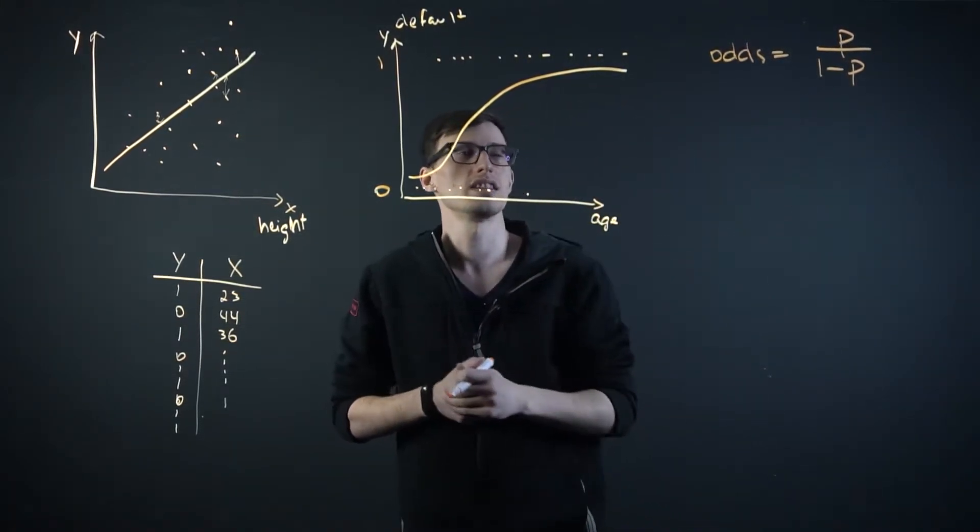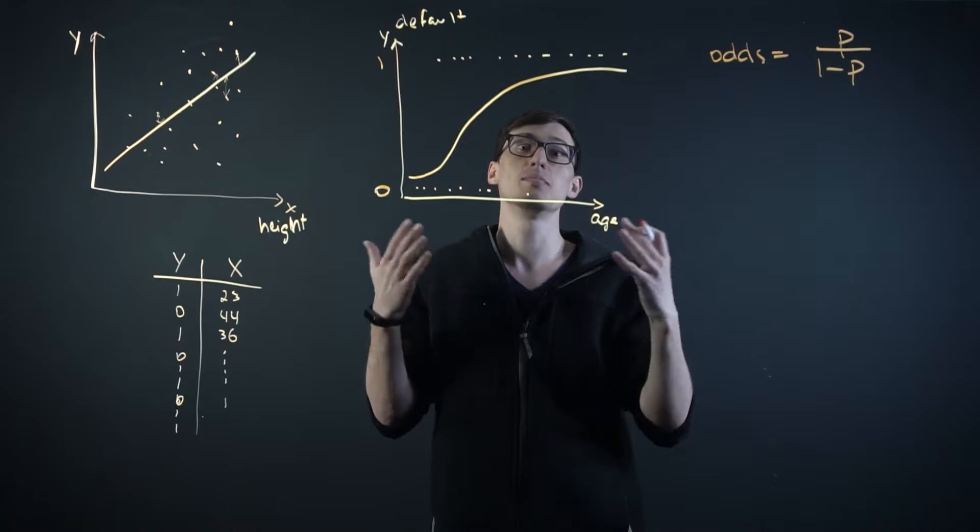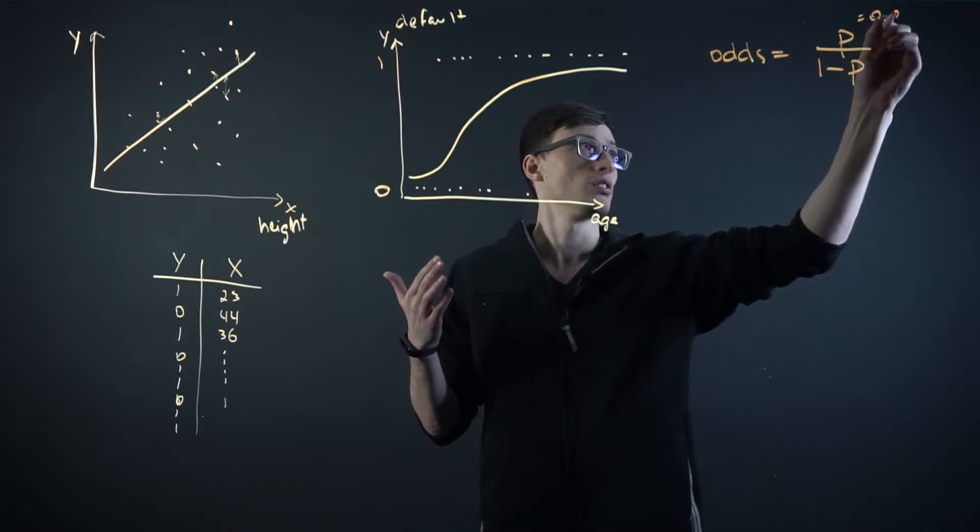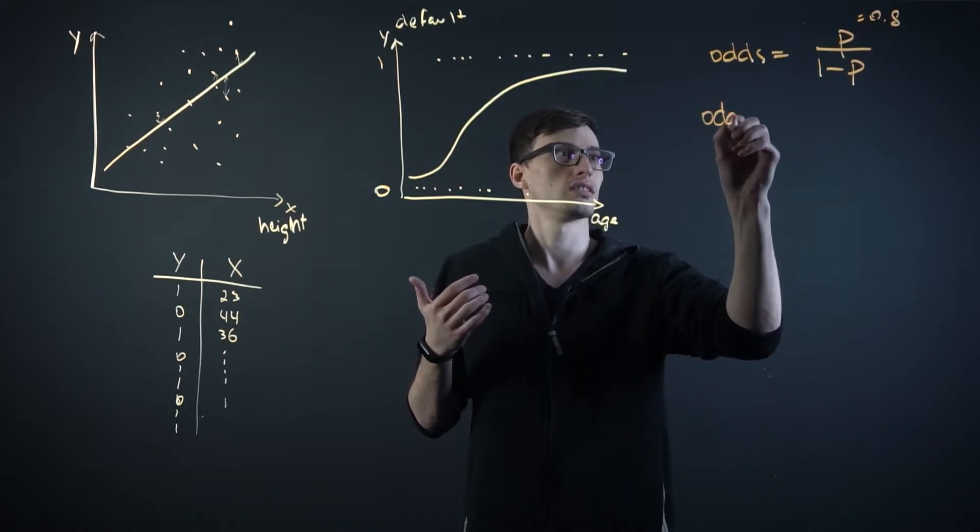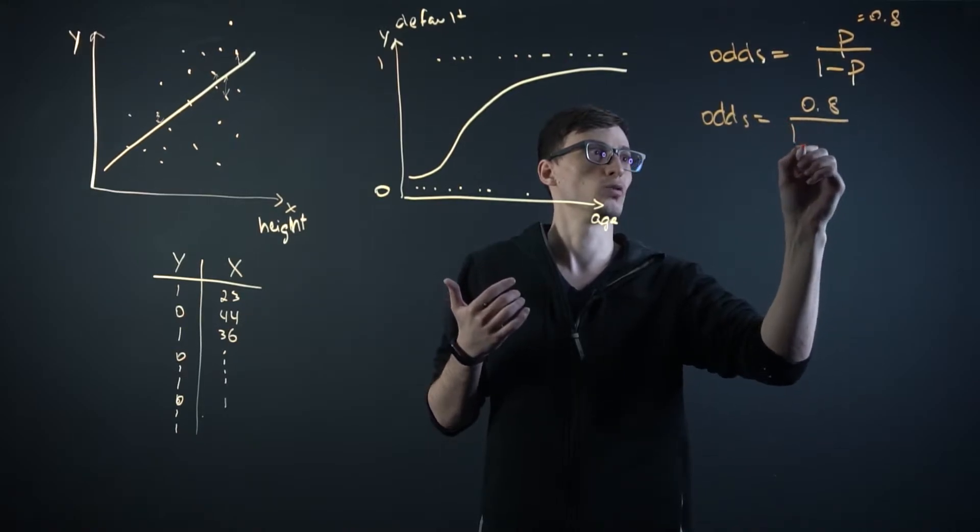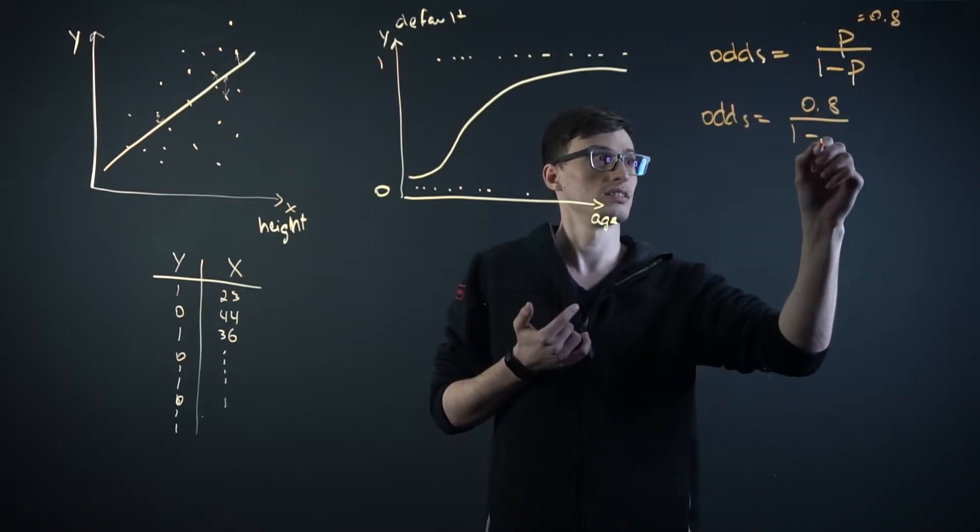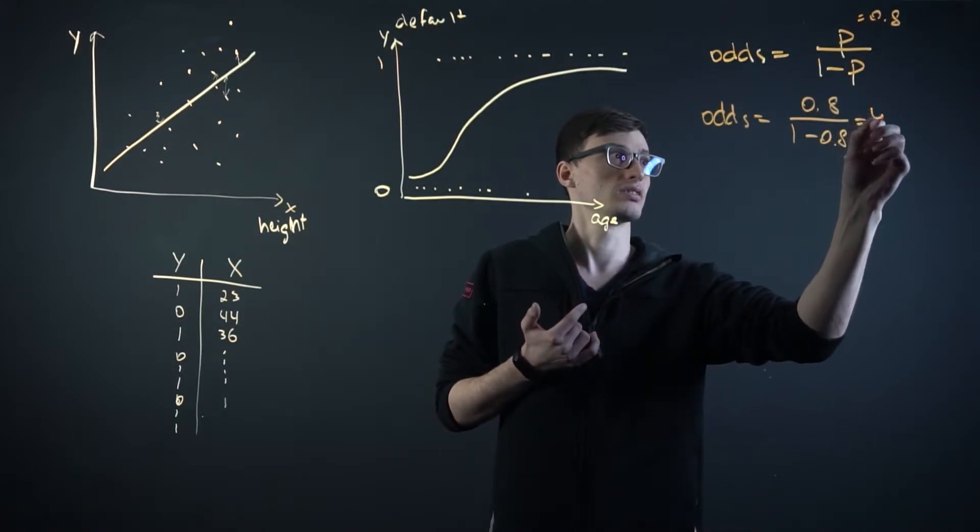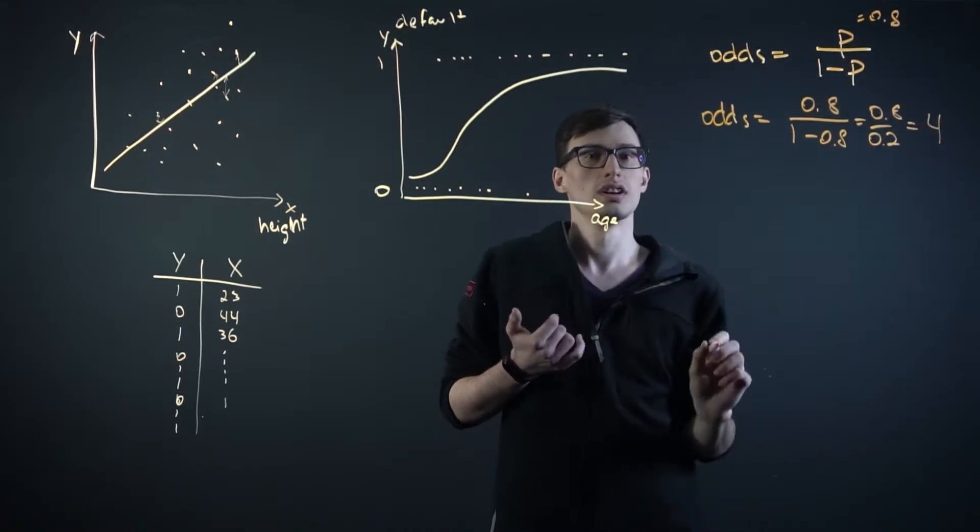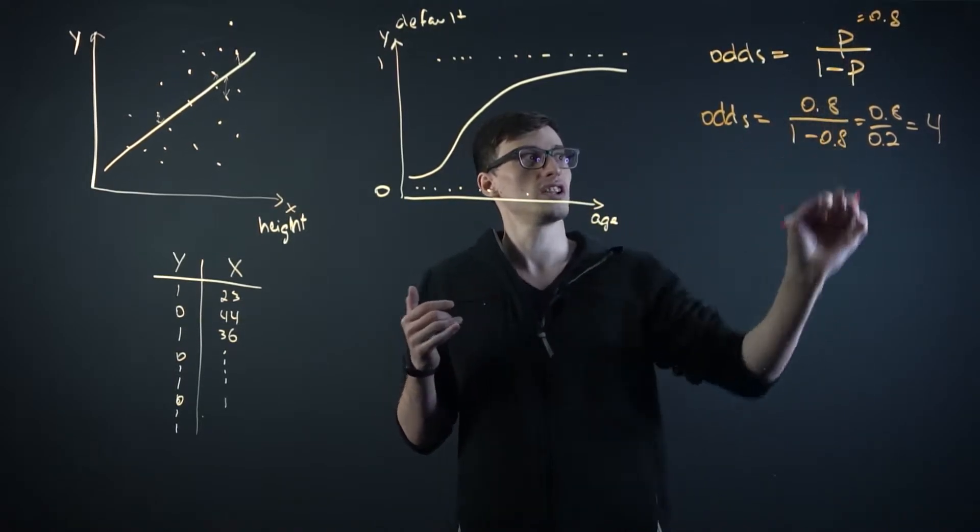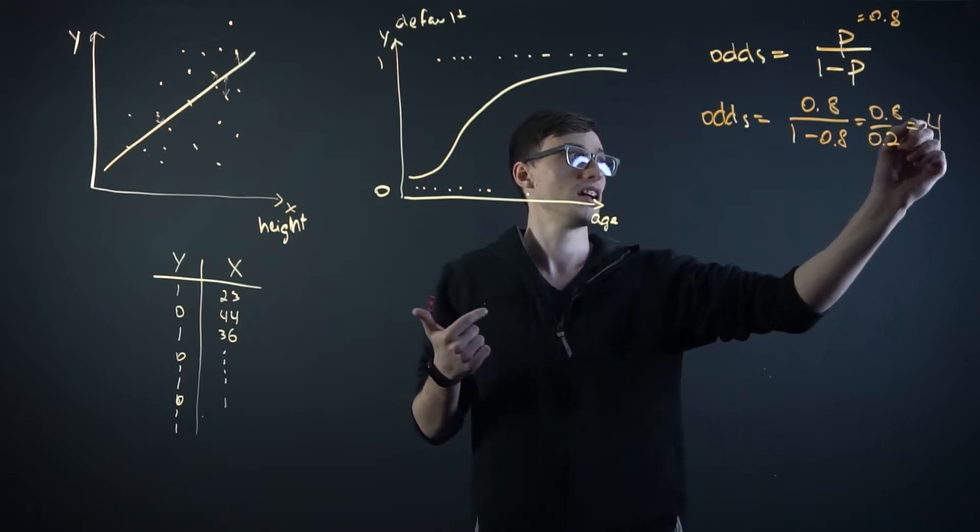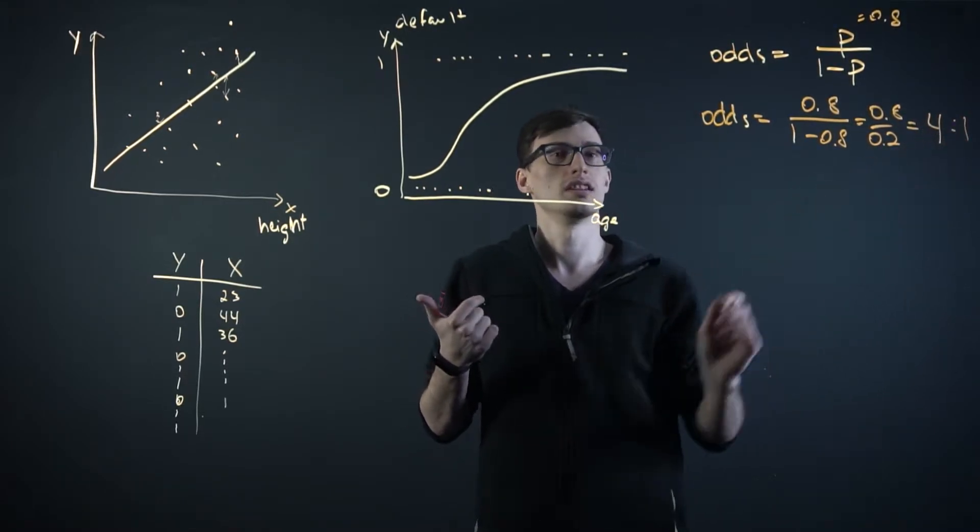What's a good example of this? So let's say your favorite football team has an 80% chance of winning. So p is equal to 0.8. So then the odds of that team winning would be what? 0.8 divided by 1 minus 0.8, otherwise known as 0.8 divided by 0.2 or 4. So if the team has an 80% chance of winning, it's either a 1 or a 0, winning or losing. We say that they have 4 to 1 odds of winning.